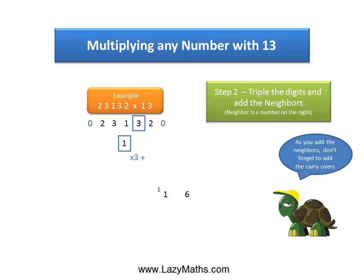Next pair, 1 and 3: triple of 1 is 3 plus the neighbor 3 gives us 6. At this step we'll take care of the carryover 1 from 11 and add it to the 6 to make the 6 into a 7.